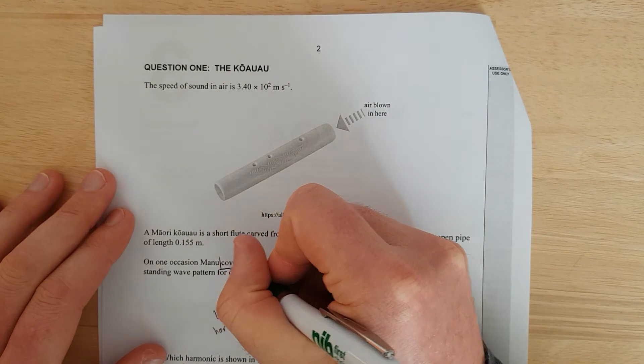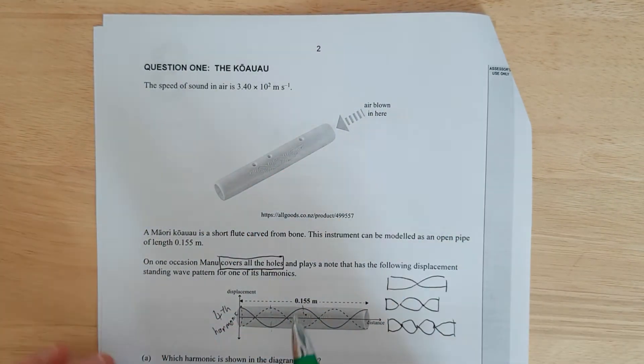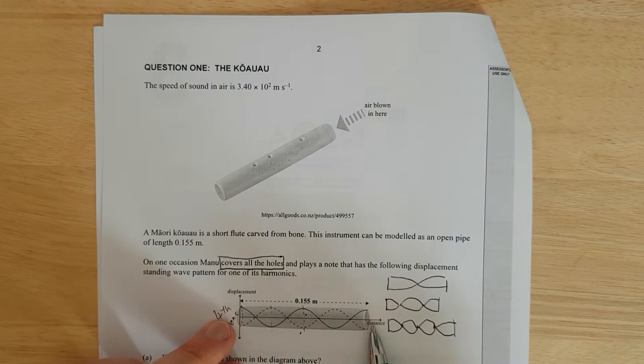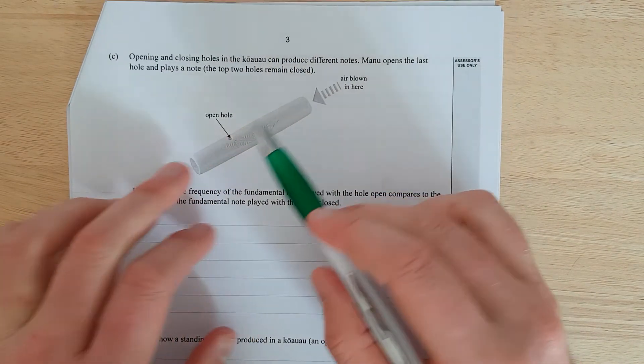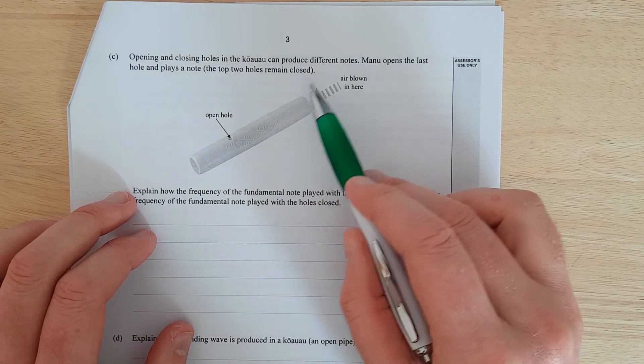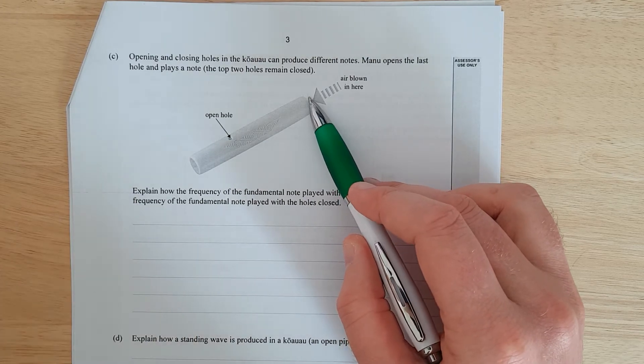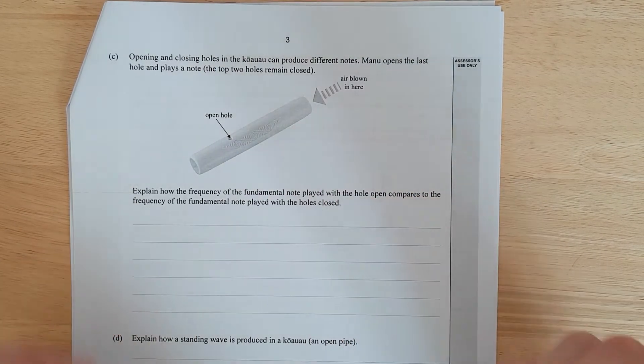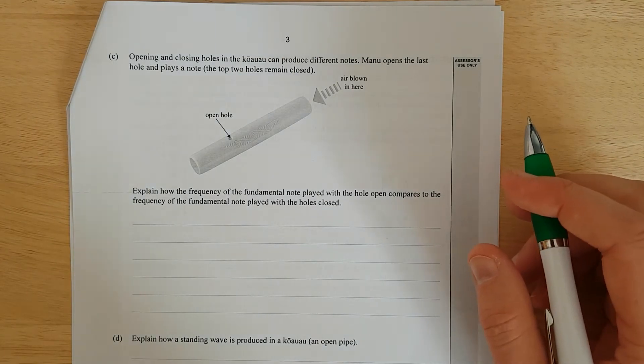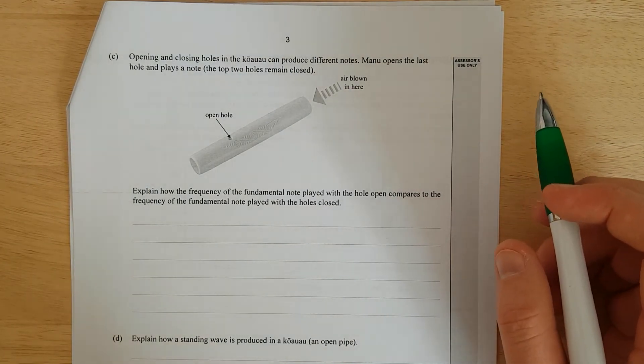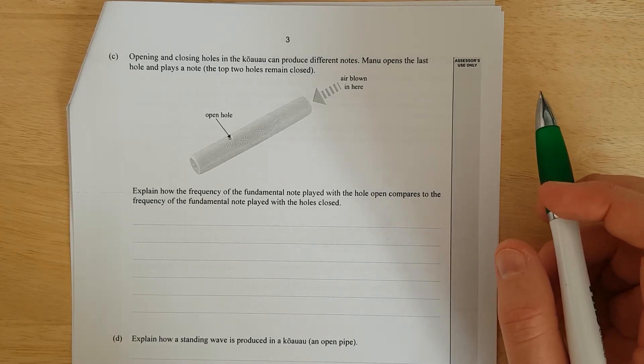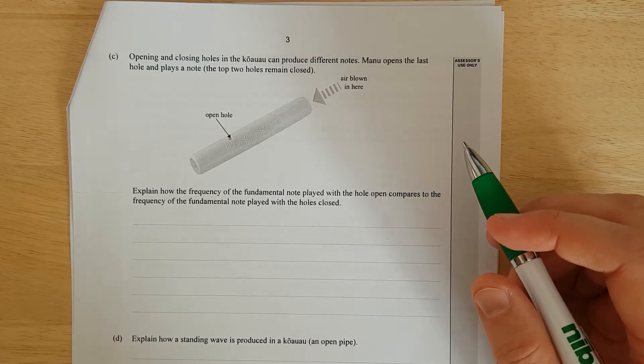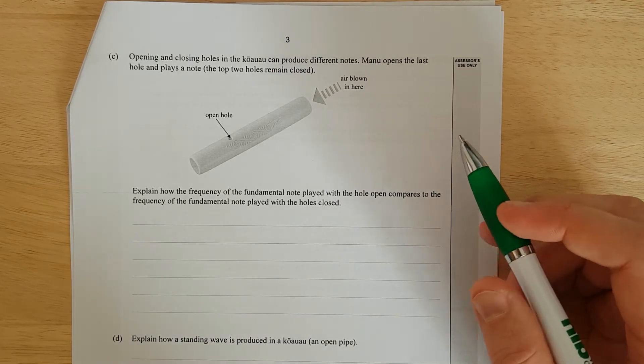Right, so over here, what have we got? They are all closed, I'm pretty sure. Covers all the holes. So initially, the effective length of the pipe is just the full length of the pipe. Here, the effective length of the pipe is from the open hole to the open end. So it's going to be open, open.